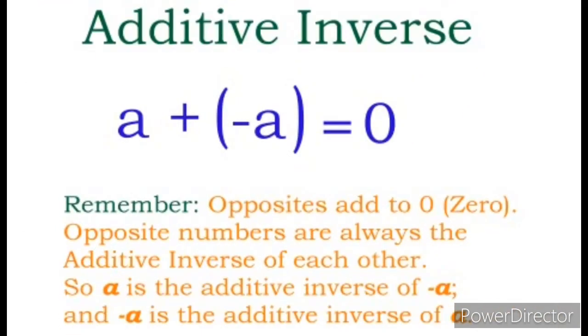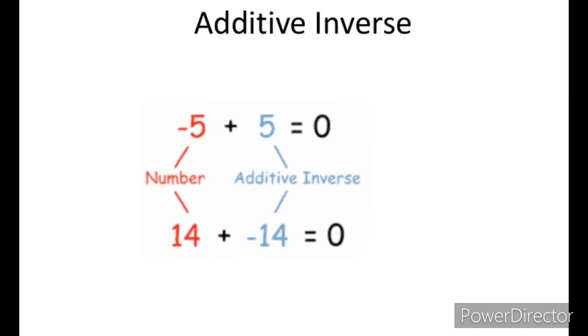Additive inverse: a plus minus a equals to 0. You should get the answer as 0. A is the additive inverse of minus a, and minus a is the additive inverse of a. So opposites add to 0. Opposite numbers are always the additive inverse of each other. See the example here.